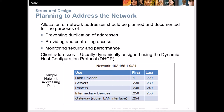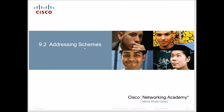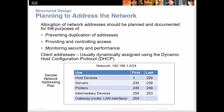Let's take a quick look at addressing schemes. The purpose of planning — and if you've taken any business process classes, you know I put a huge emphasis on planning. You can save yourself a lot of work just by planning. If you spend five hours planning and save ten hours of work, that's a big cost benefit. With network address planning, we prevent duplication of addresses, provide and control access, and monitor security and performance.